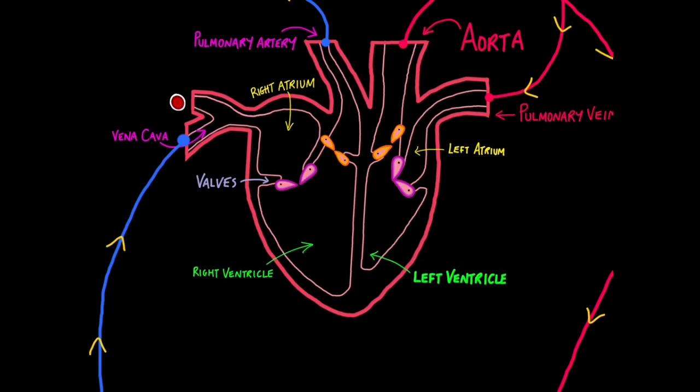The first important thing you must understand is the heart is flipped in a diagram. So the right side is actually your left side, and the left side is your right side. There are four main blood vessels linked to the heart. Two of which are veins, the vena cava, which is the largest vein in the body, and the pulmonary vein. And two of which are arteries, the pulmonary artery, and the aorta, the largest artery in the body.